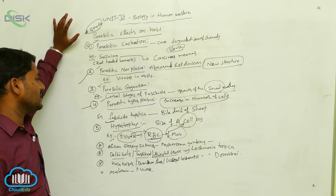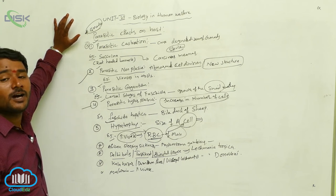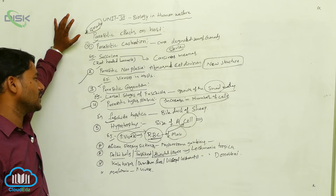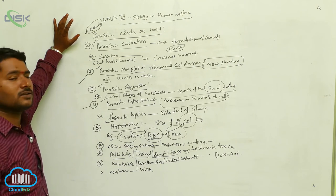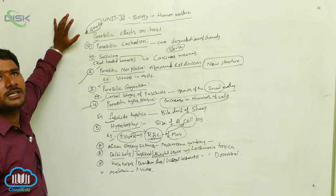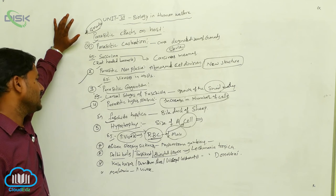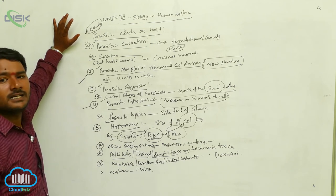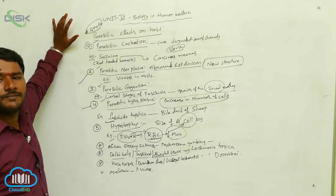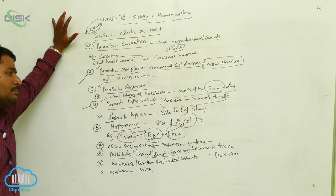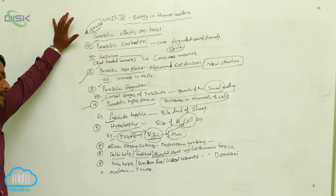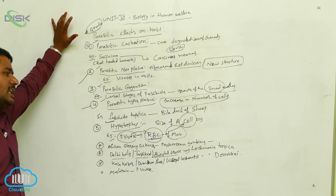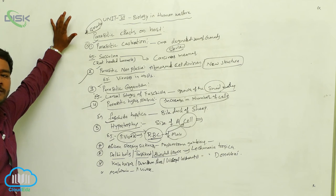Parasitic gigantism refers to when a parasitic infection causes abnormal growth in the size of the individual. For example, when larval stages of Fasciola enter into a snail, the snail's body increases abnormally. Parasitic hyperplasia is when a parasite causes an increased number of cells through division. For example, Fasciola hepatica causes an increase in the number of cells in the bile duct of sheep.